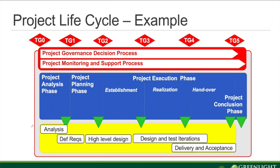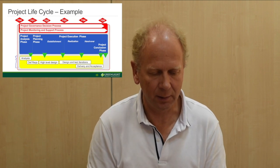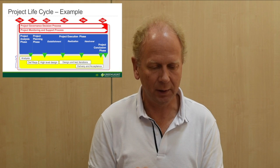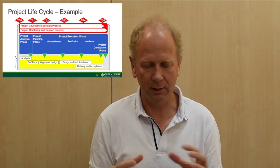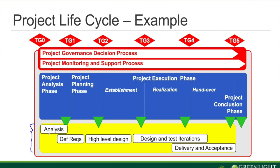This is an example of a project work model. It could be anything, but this is just to give you an idea. Here you can see five different parts — this could be part of a WBS work breakdown structure. In this case we will have an analysis, a definition of requirements, high-level design, design and test iterations several times, and maybe finally delivery and acceptance. This is one typical product — could be a software development project, hardware development, or a customer delivery.